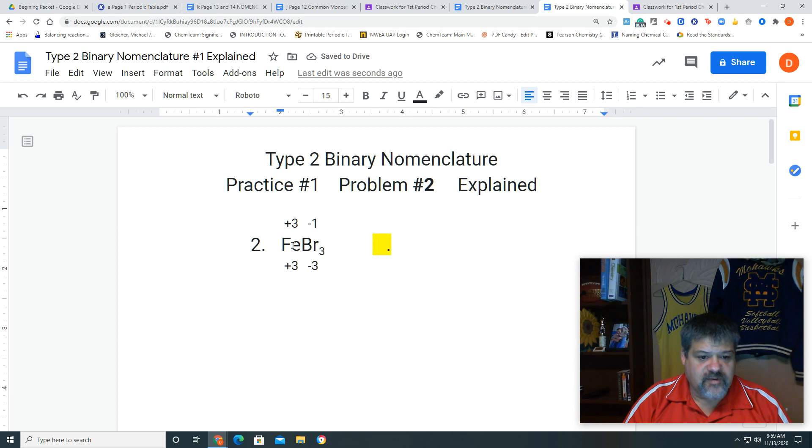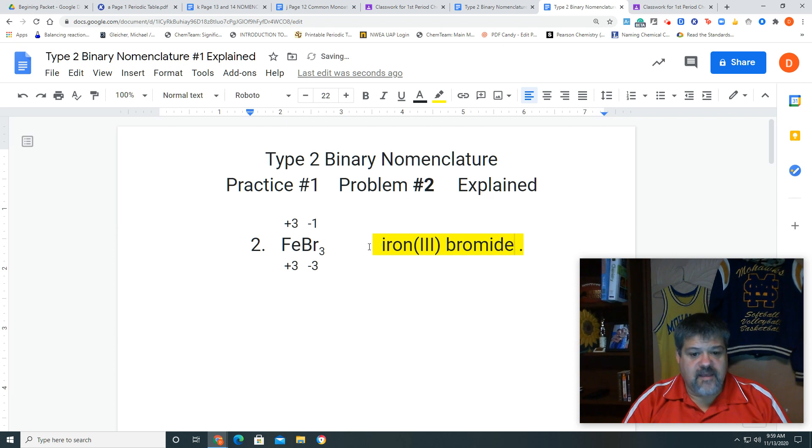So the charge for bromine is negative one, charge for iron is three. So when we write the name out of a Type 2 ionic compound, we have to put the charge of the metal in Roman numerals. So we're just going to say that it is iron, and then we have to put Roman numerals three. That is the Roman numerals for three, and then we're going to put bromine. Remember we always change the ending of it to ide, so it would be bromide. And there is our answer for that type.